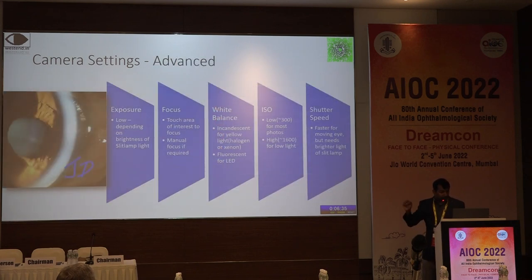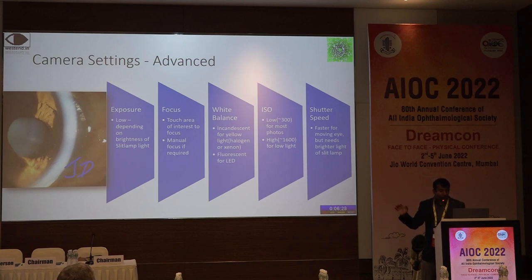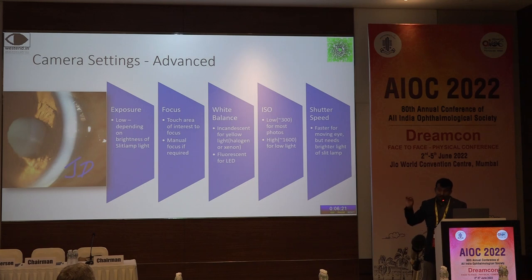Camera other settings: exposure, focus, white balance, ISO, shutter speed. Most of the time the auto settings work. If they don't work, you can change to manual exposure, manual focus, white balance if the photograph doesn't look that good.